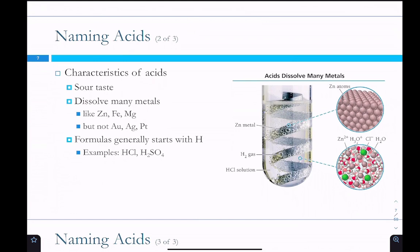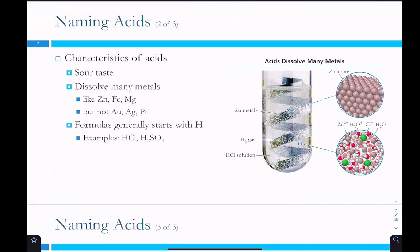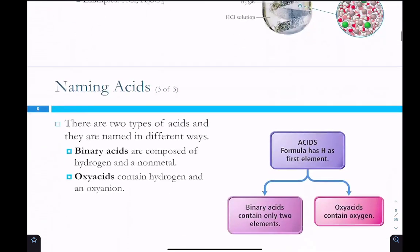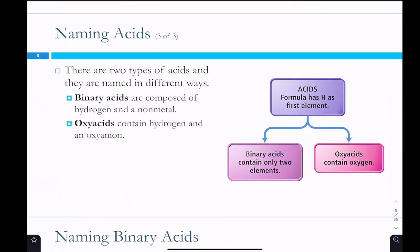Characteristics of acids. Acids have a sour taste. They dissolve many metals like zinc, iron, magnesium. They don't dissolve other metals like gold, silver, or platinum. I believe we'll talk about activity series. And they generally start with H. So, you can have one hydrogen, like in HCl, hydrochloric acid. Or you can have two hydrogens, like in sulfuric acid.